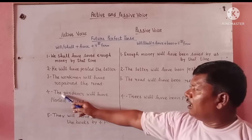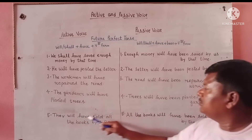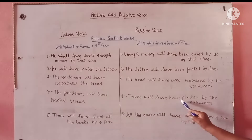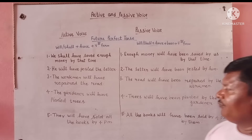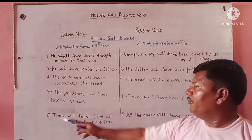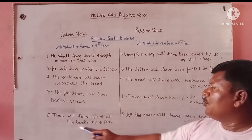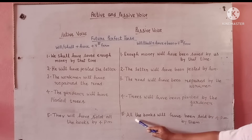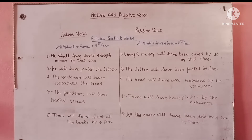Active: The gardener will have planted trees. Passive: Trees will have been planted by the gardener. Active: They will have sold all books by 4 pm. Passive: All the books will have been sold by 4 pm by them.